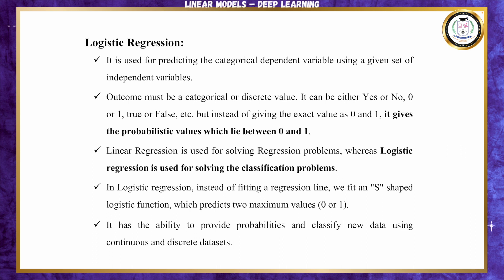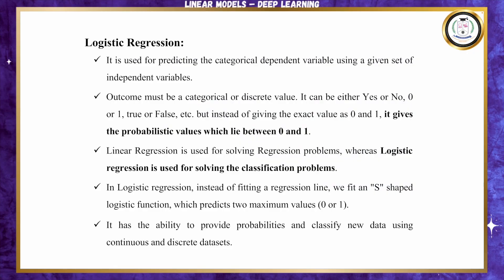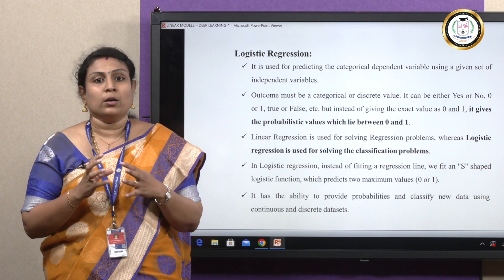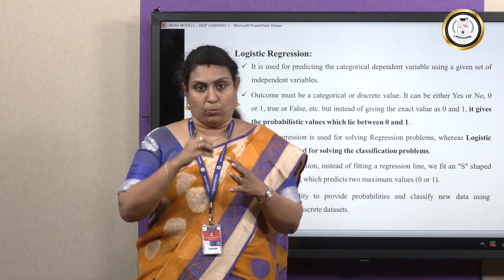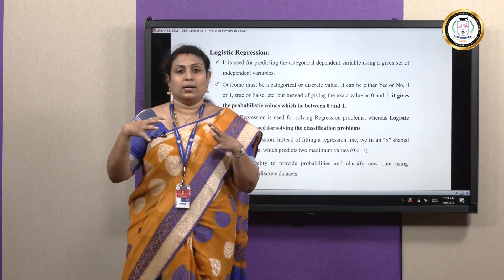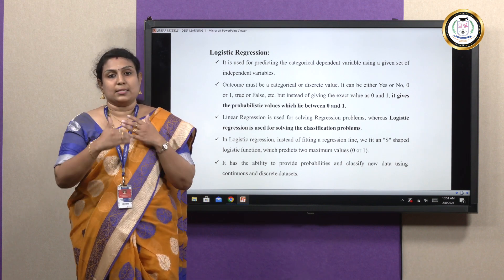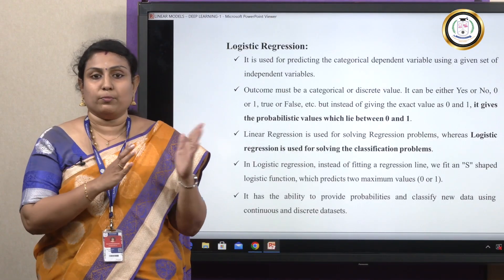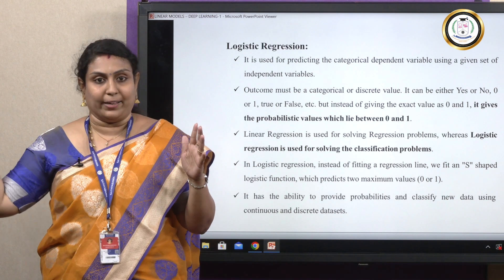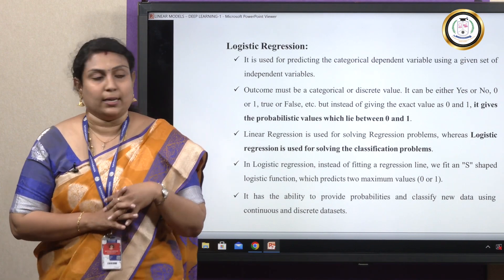The third model is logistic regression. Logistic regression predicts a categorical dependent variable using a given set of independent variables. For example, based on an employee's experience and performance, the salary will be increased — performance is the independent variable and salary increase is the dependent variable. Or consider date of birth: it cannot change, but as years pass, age increases based on date of birth. The relationship between dependent and independent variables is what logistic regression models.